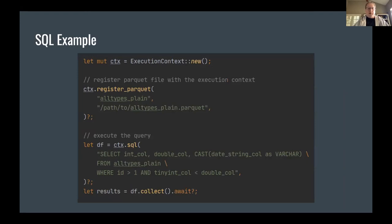Here's an example using the SQL API. We start with an execution context as with the previous example. Here, instead of querying the Parquet file directly, we're registering the Parquet file as a table on the context — calling this table 'all_types_plain'. After that, we can reference it within the SQL statement. The SQL method returns a DataFrame, which is exactly the same DataFrame you would have if you had built it through the DataFrame API, and again we're calling collect to execute the query.